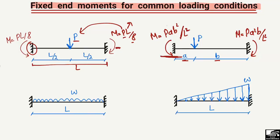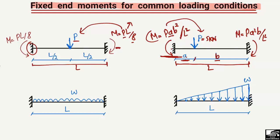P is the point load, for example 5 kilonewton or 10 kilonewton, but it should always be a point load. a is the distance from the left end to the point load. b is the distance from the right end to the point load. For the left support moment formula Pab²/L², we put a square on b. For the right support moment Pa²b/L², we square a instead. L is the total length of the beam.